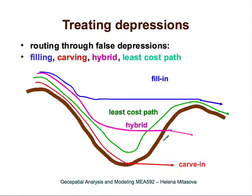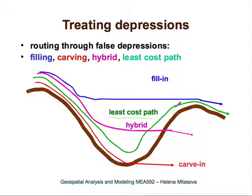The fourth approach is the least cost path approach. This doesn't change the digital elevation model; instead, flow goes all the way to the bottom of the depression and then finds the least cost path out along the lowest gradient. This approach uses all computed gradients without changing or discarding any data, which is especially important when depressions are nested and very large.